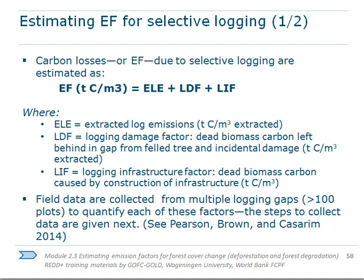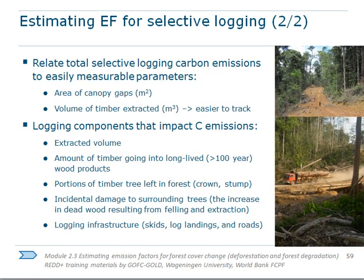The loss component of the emission factor is made up of three types of emissions: the carbon stored in the extracted logs, the carbon lost due to collateral damage to neighboring trees, and the carbon emitted due to logging infrastructure construction. Since the extracted wood is usually high-quality and will be made into furniture, the carbon it contains will not be emitted immediately but stored in wood products for several years — this can be accounted for and subtracted from emission estimates.